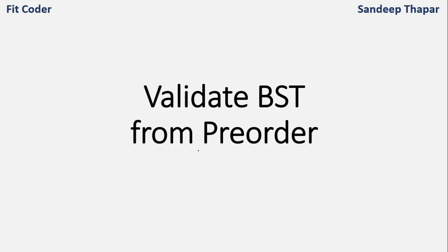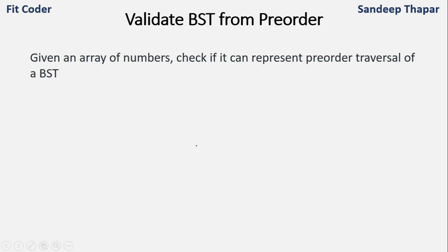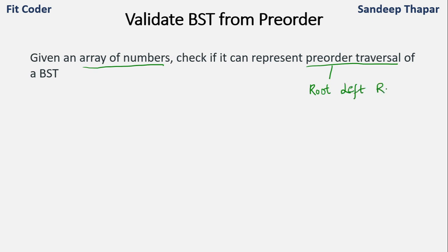In this video we will discuss how we can validate that a given pre-order traversal is valid for a binary search tree. We are given an array of numbers and we have to check whether this represents a valid pre-order traversal of a binary search tree. Pre-order traversal is root, left, and then right — first visit the root, then go to the left subtree, and then the right subtree.